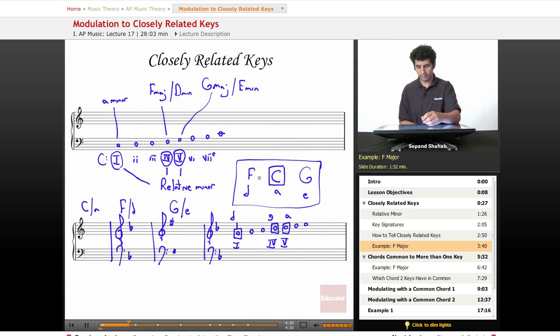So we can make a similar diagram for F major. So on one side, we've got B flat major over here and C major over here and then the relative minors, D, G, and A.